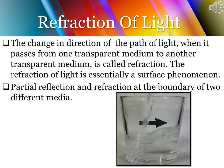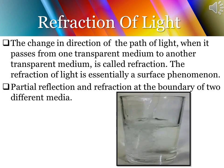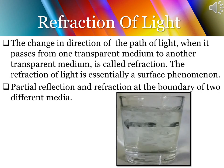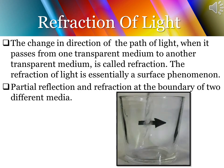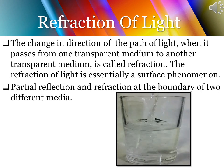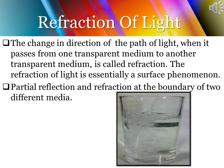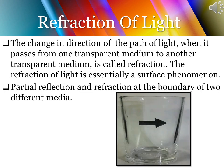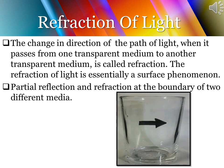There is partial reflection and partial refraction at the boundary of two media. When light traveling in one transparent medium falls on the surface, a small part of it is reflected back in the same medium obeying the laws of reflection, and the rest is refracted through the other medium. The intensity of the refracted light is less than that of the incident light because part of it has suffered reflection.